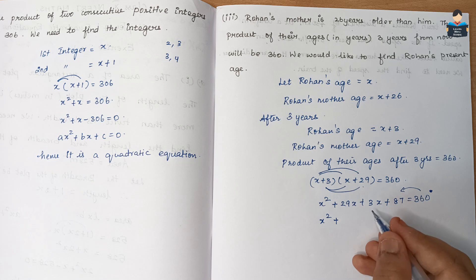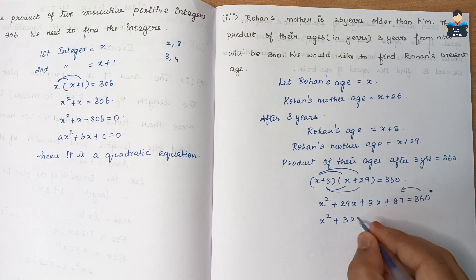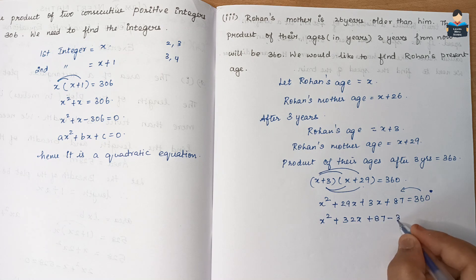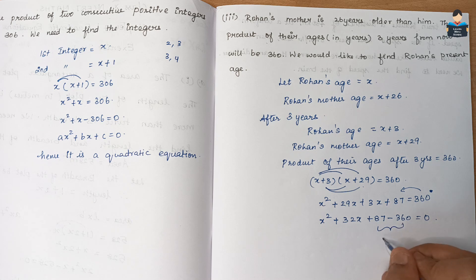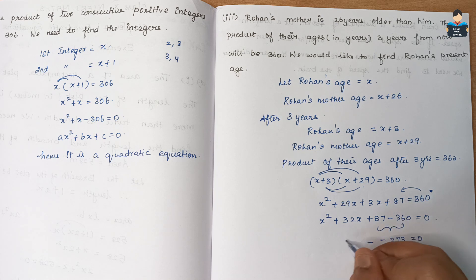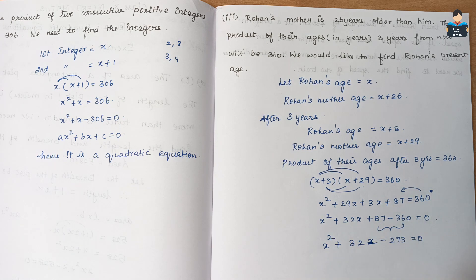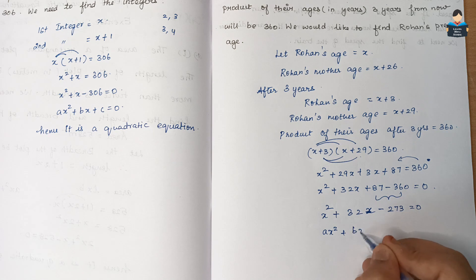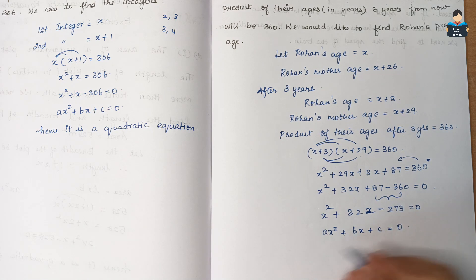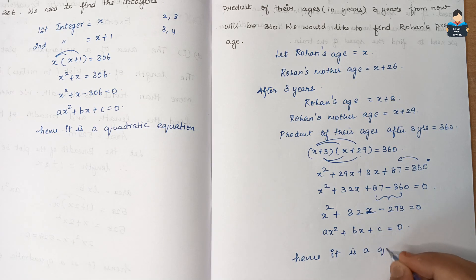Rearranging: x² + 32x + 87 − 360 = 0, giving x² + 32x − 273 = 0. This is of the form ax² + bx + c = 0, hence it is a quadratic equation.